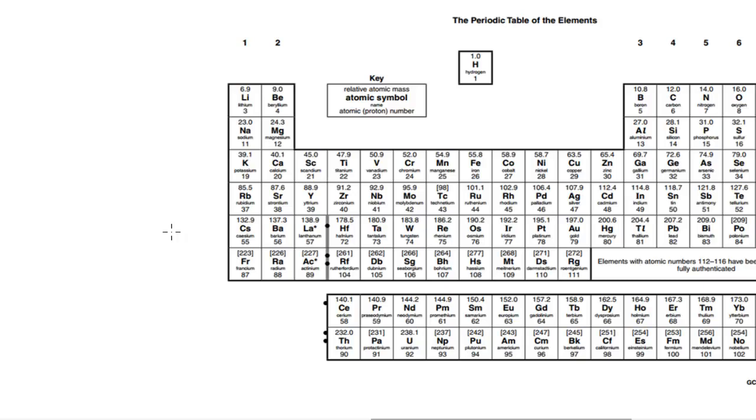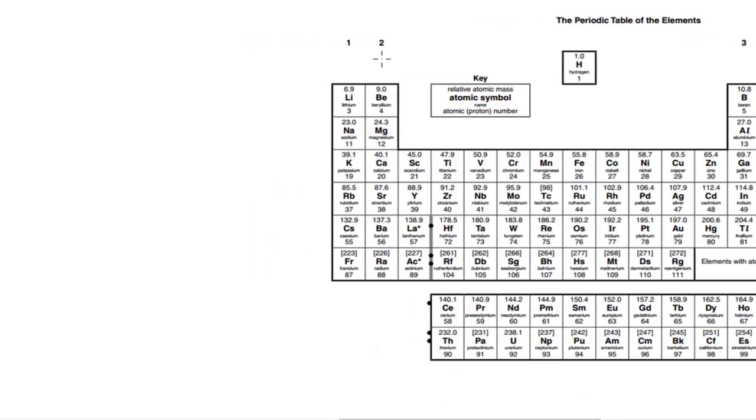These group 2 elements, which I've been talking about in the past few videos, form carbonates. The carbonates would have the general formula, if I use M to represent the actual group 2 metal, it would have the general formula of MCO3.